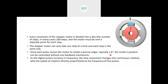Every revolution of a stepper motor is divided into a discrete number of steps. A full revolution consists of 360 degrees. Depending on the number of individual coils, the steps can be increased or decreased — more coils means each step is very small and the number of steps is large. In many cases it is 200 steps. The motor must be sent a separate pulse for each step and can only take one step at a time; each step is the same size.